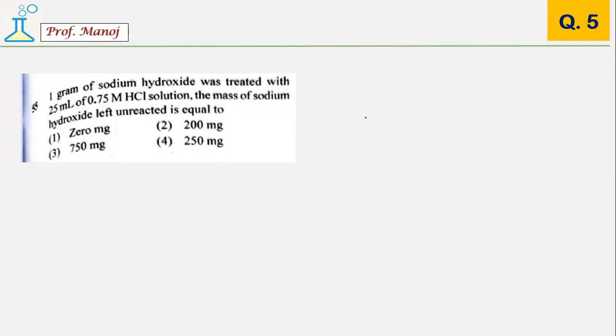In the next question, 1 gram of sodium hydroxide treated with 25 ml of 0.75 molar HCl solution. Find the mass of NaOH left unreacted. You have NaOH which is 1 gram, which is 1000 milligram. Then they are giving you HCl, 25 ml, 0.75 molar.